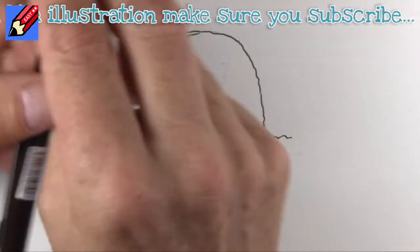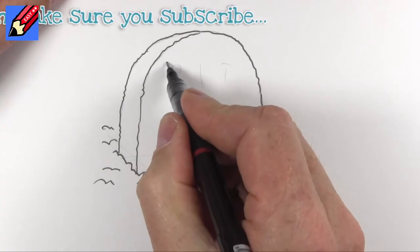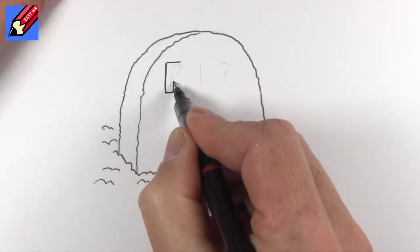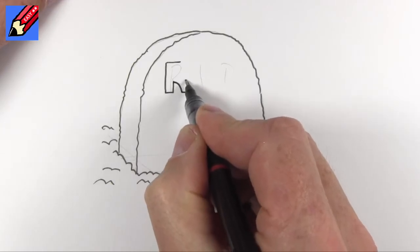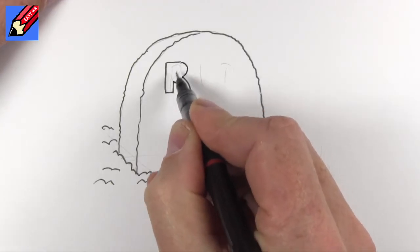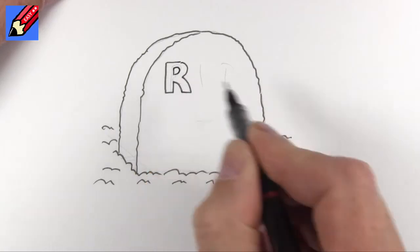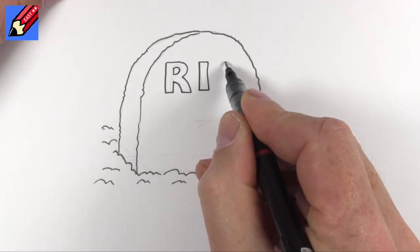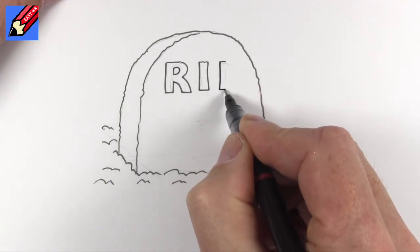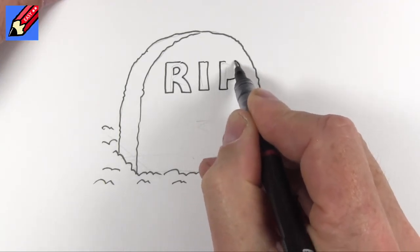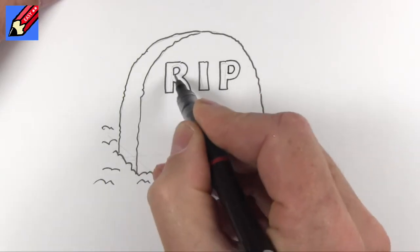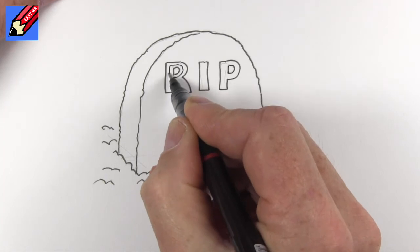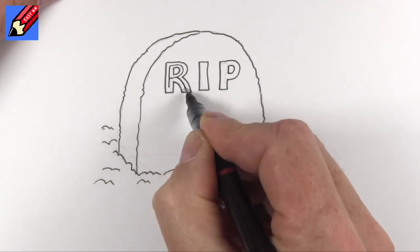And then what we need to do is to draw this in a kind of quite a chunky R, and then that's going to come all the way around, follow this up here and follow inside there. I, and then straight down, across, up, and then all the way around, and then we want to draw lines inside it.